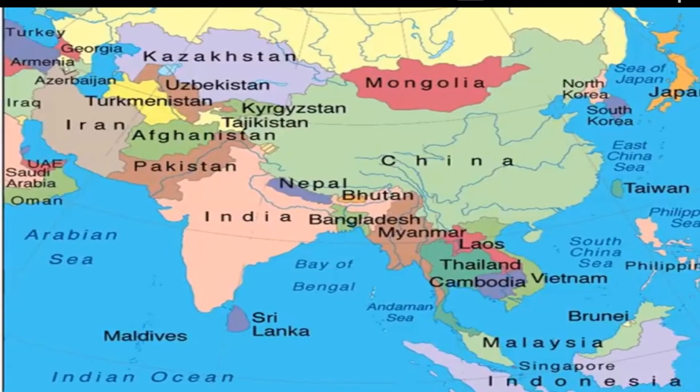Children, you can see Mongolia in this map, and you can also see Uzbekistan, which is shown in brown, bordering Kazakhstan.